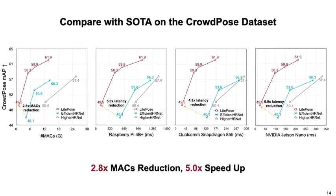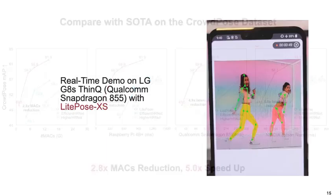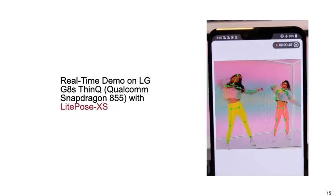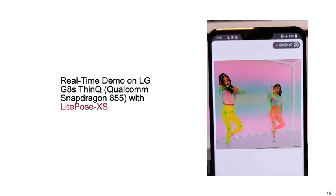Finally, we show the performance results of LightPOS. Compared with state-of-the-art methods, LightPOS achieves 2.8 times MACs reduction and up to 5 times speedup on edge devices. We also show a real-time demo on a mobile phone.